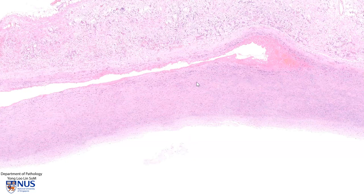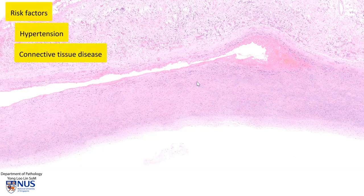In real life, this would have been filled with blood, but this has dropped out during processing. This aortic dissection usually occurs as a result of weakening or damage of the aortic wall, and some very important predisposing factors would be hypertension or pre-existing connective tissue disease.